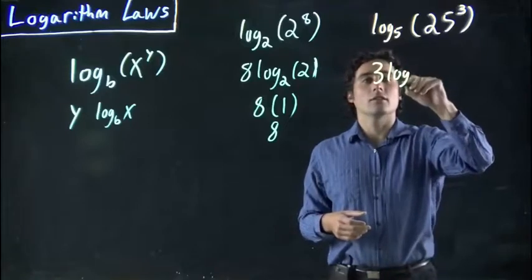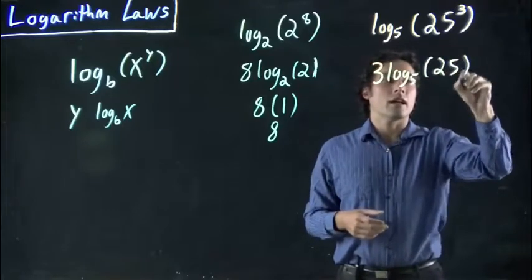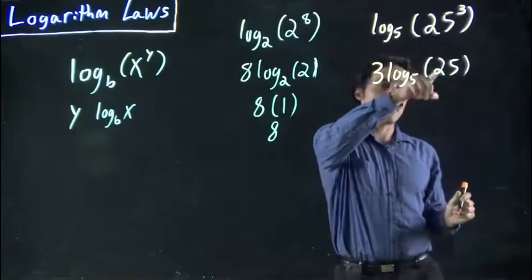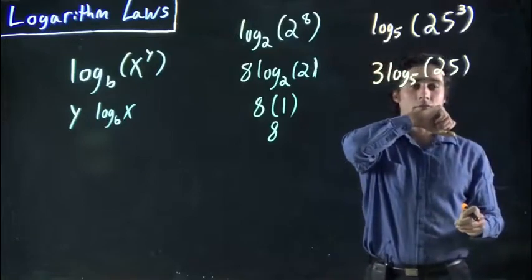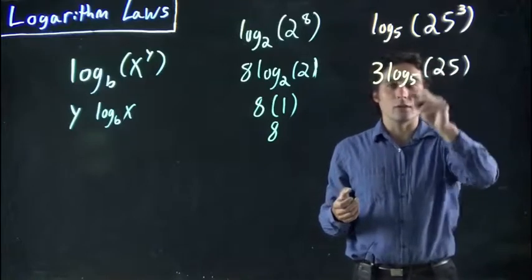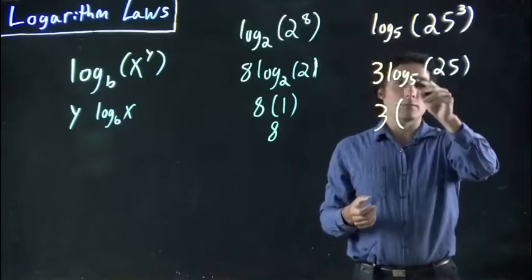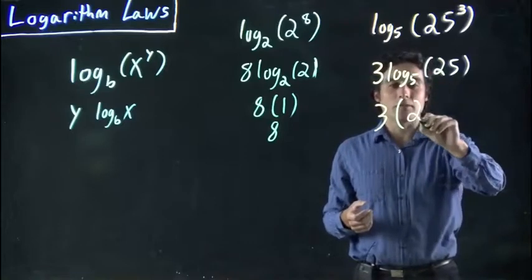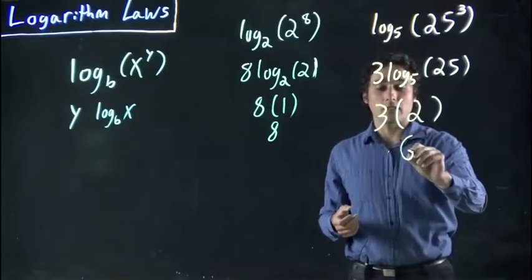3 log base 5 of 25. And now I just have to think, 5 to the power of what gives me 25? Well, 5 squared. So, this whole thing right here is equal to 2. This log to the base 5 of 25 just becomes 2. And so our answer is 6.